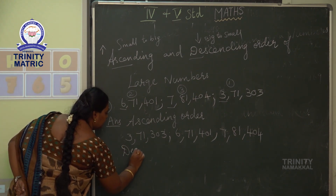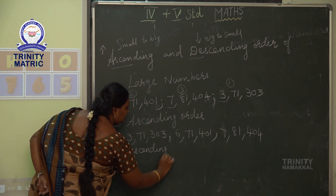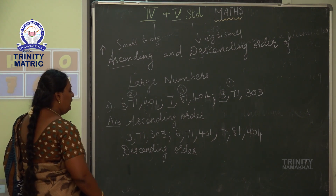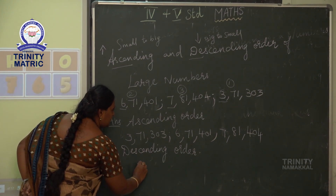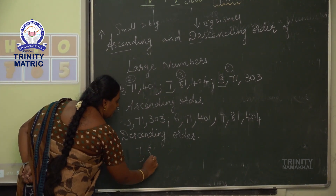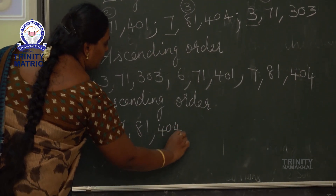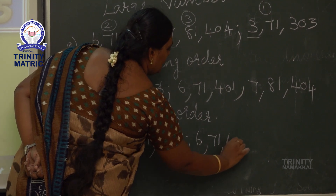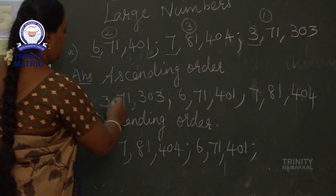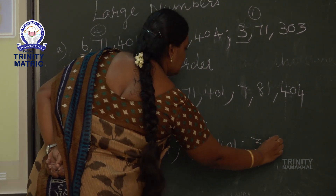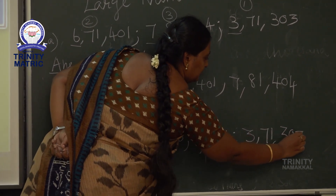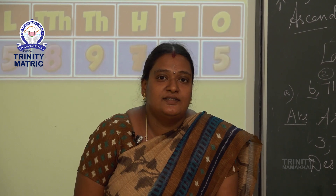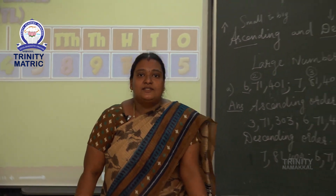Next, descending order. Descending order means big to small — just reverse the ascending order. So: 7,081,404, then 6,071,401, then 3,071,303. You have already learned ascending and descending order in 2nd and 3rd standard itself, so you are well known in this topic.